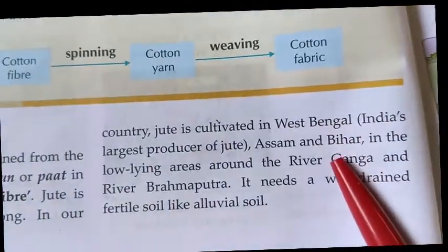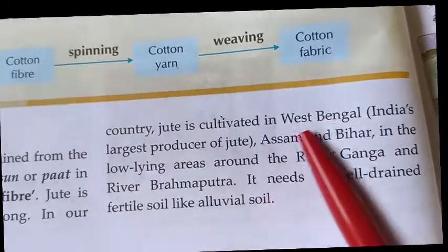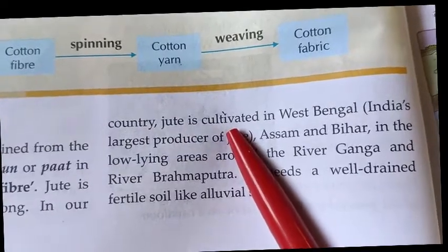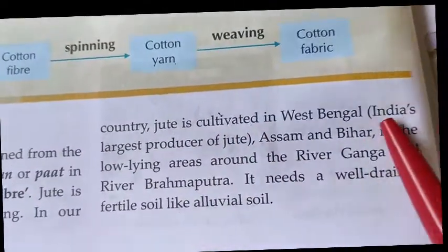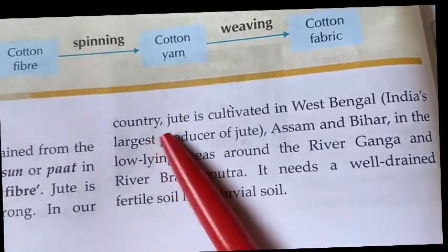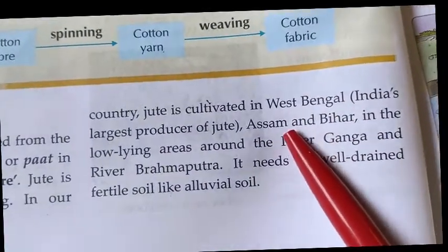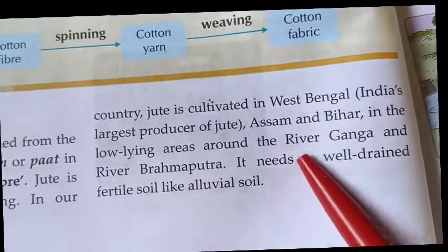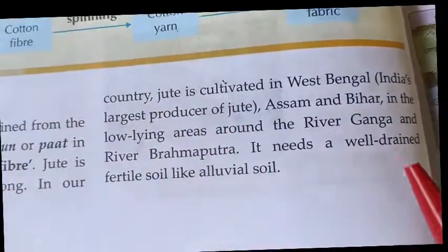In our country, jute is cultivated mainly in West Bengal, which is India's largest producer of jute. It is also cultivated in Assam and Bihar, in low-lying areas around the River Ganga and River Brahmaputra.